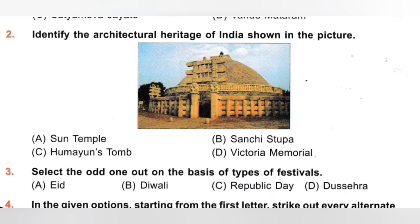Third. Select the odd one out on the basis of type of festivals. A. Eid, B. Diwali, C. Republic Day, D. Dasara. Eid, Diwali and Dasara are religious festivals. Eid is celebrated by Muslims; Diwali and Dasara are celebrated by Hindus. But Republic Day is a national festival. So the odd one out is option C, Republic Day.